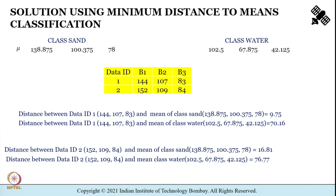Similarly, the distance between data ID 2 and mean of class sand comes out to be 16.81, and the distance between data ID 2 and mean of class water comes out to be 76.77. The lowest is 16.81, so data ID 2 is assigned to class sand.